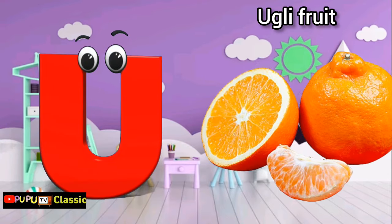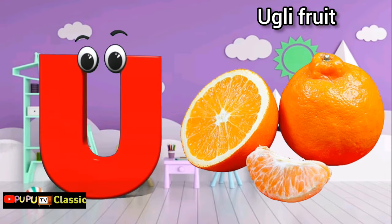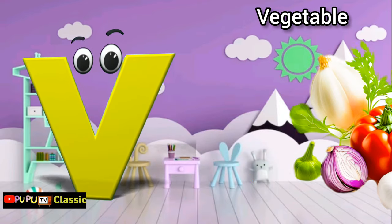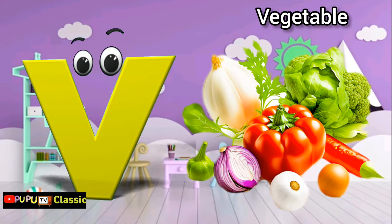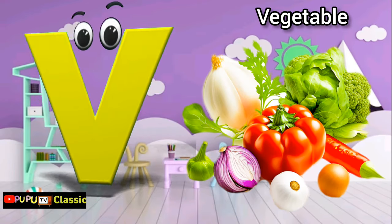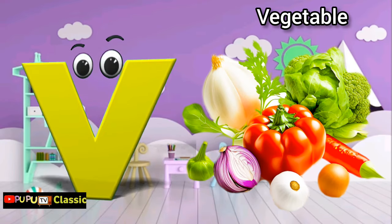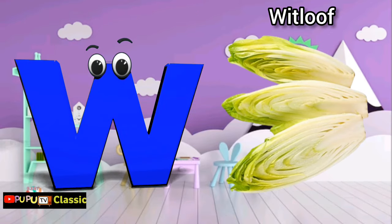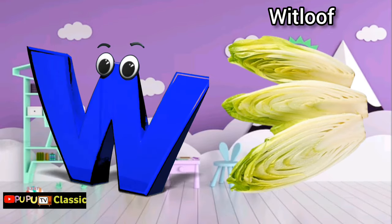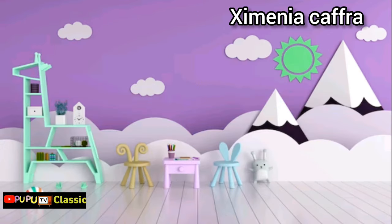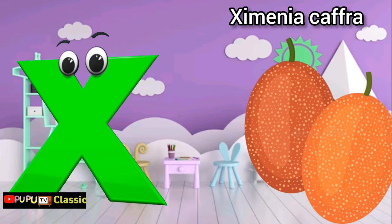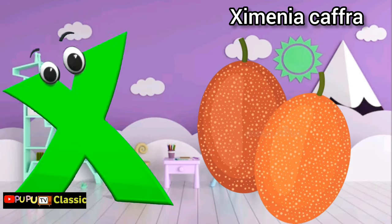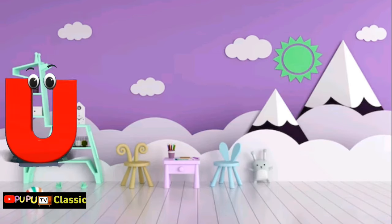U is for ugly fruit. V is for vegetables. W is for whitloaf. X is for zymenia caff.